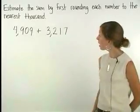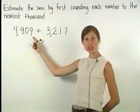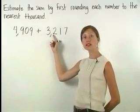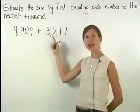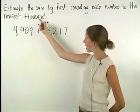Here, we're asked to estimate the sum of 4,909 and 3,217 by first rounding each number to the nearest thousand.